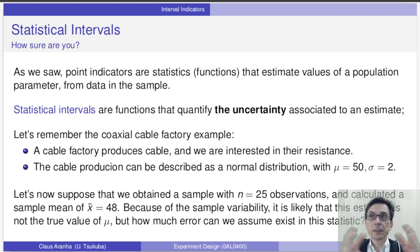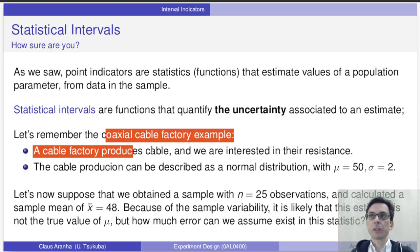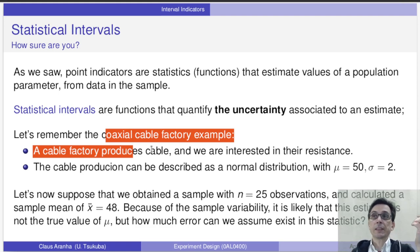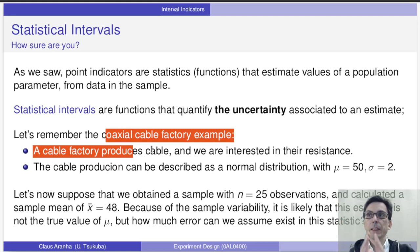A statistical interval is a statistic that helps us estimate this uncertainty associated with an estimate. Let's remember the cable factory example: we have a factory that produces electrical cables and we are interested to know if the resistance of these cables is in a certain acceptable range. We can describe this model of the expected resistance of the cables as a normal curve with mean 50 and standard deviation 2.